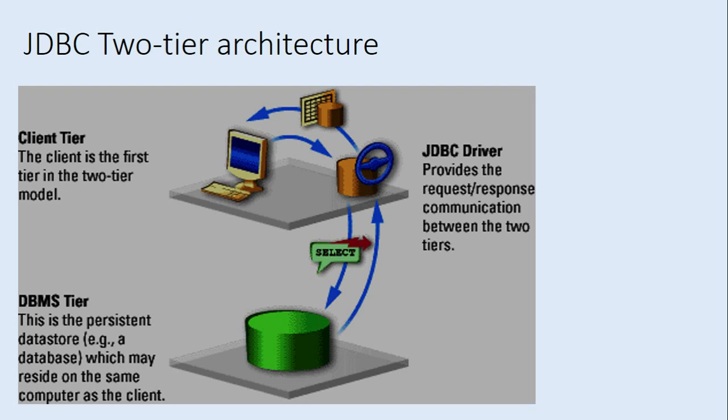Welcome back to this tutorial. In this tutorial we are going to talk about JDBC two-tier and three-tier architecture. Let us begin the discussion with two-tier architecture. In the two-tier architecture we have two tiers: one is the client tier and the other is the database tier, that is the DBMS tier.